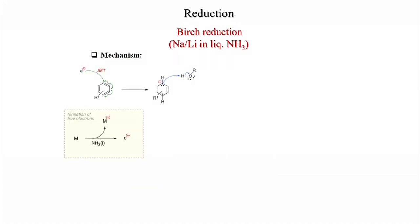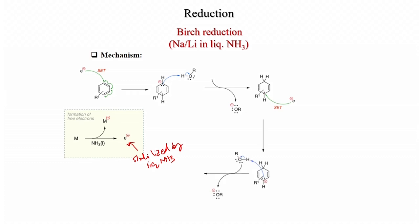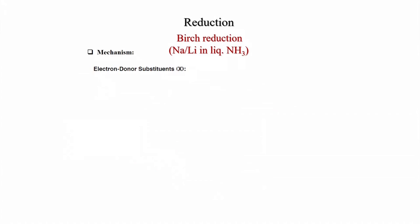The mechanism: when metal is added to liquid ammonia, the metal becomes M+ and liberates one electron, which is stabilized by liquid ammonia. That electron then adds to the benzene ring. A radical anion forms, and the radical and anion prefer to stay para to each other to minimize repulsion. The anion is then protonated by the alcohol, giving OR minus, and after protonation a radical is formed. That radical accepts another electron to become an anion, which is again protonated by alcohol to give the cyclohexadiene system.